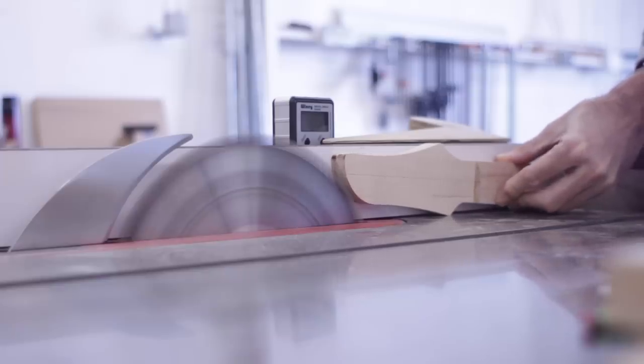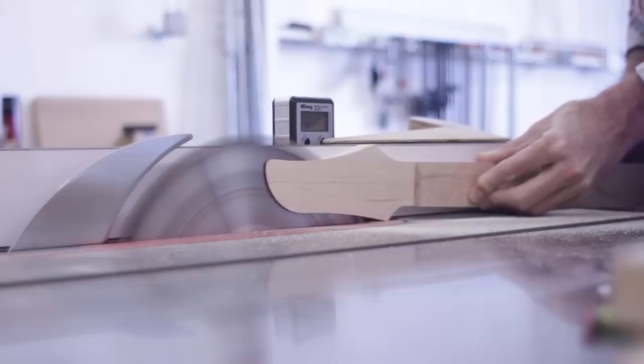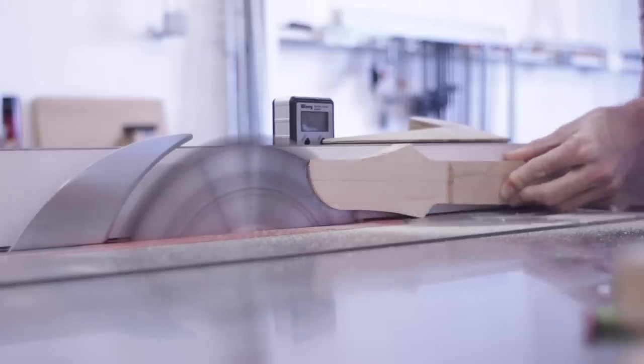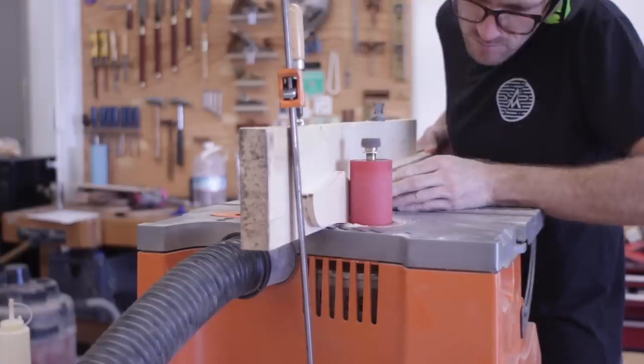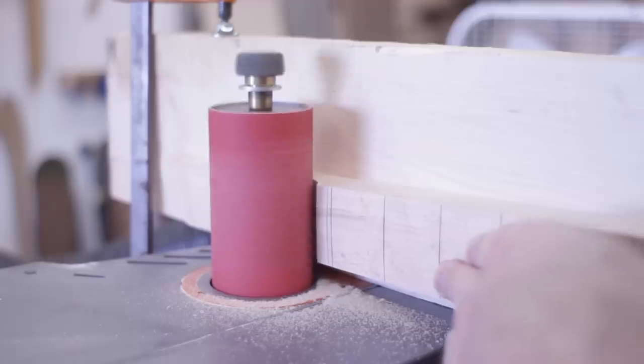The headstock needed to be trimmed down so that the strings are pulled over the nut when on the guitar, and I used my table saw to cut away the majority, then used my spindle sander with a fence clamp to it so I could sand in the transition to the fretboard.